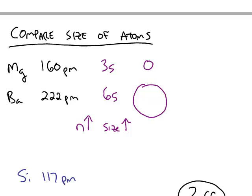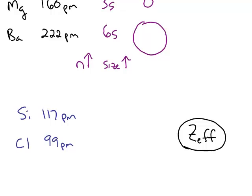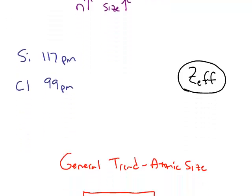This is a comparison between two elements in the same column, but if you look at two elements in the same row, for example, silicon and chlorine, silicon, 117 picometers, is larger than chlorine, 99 picometers.